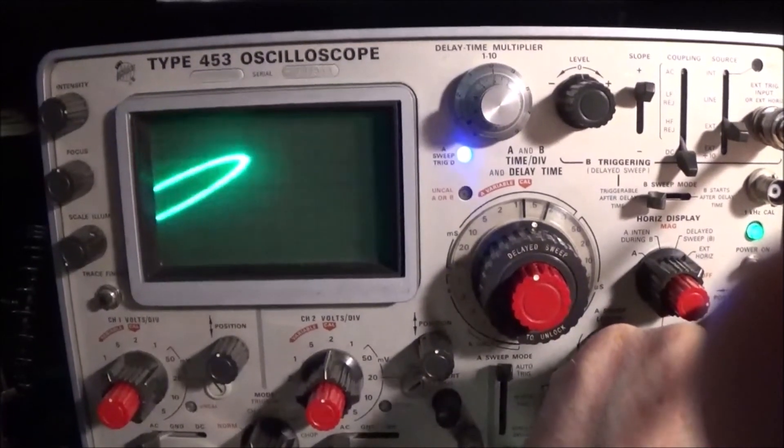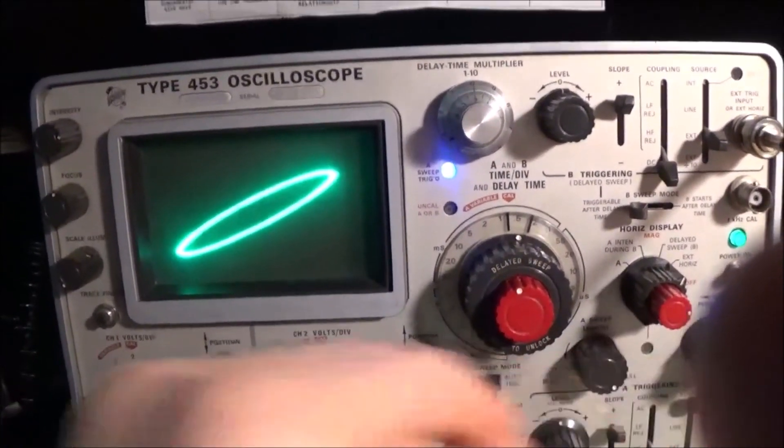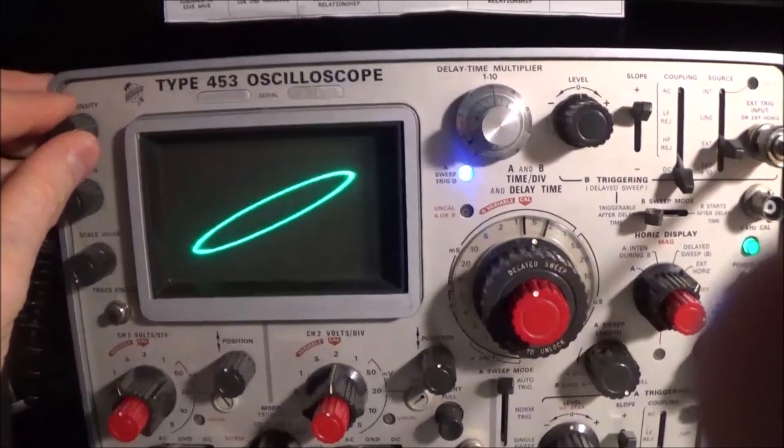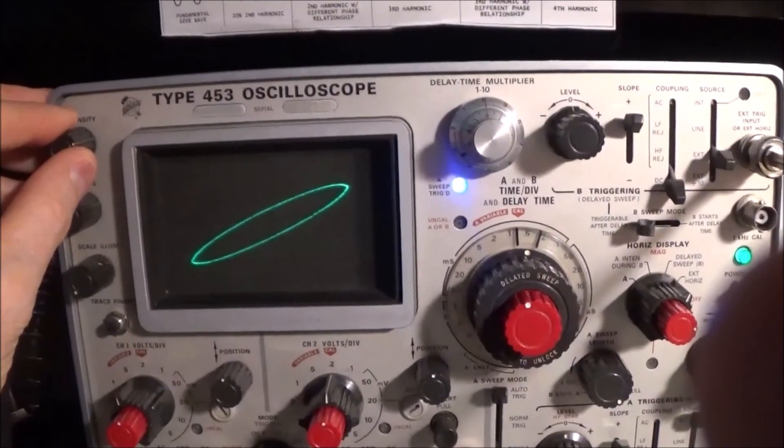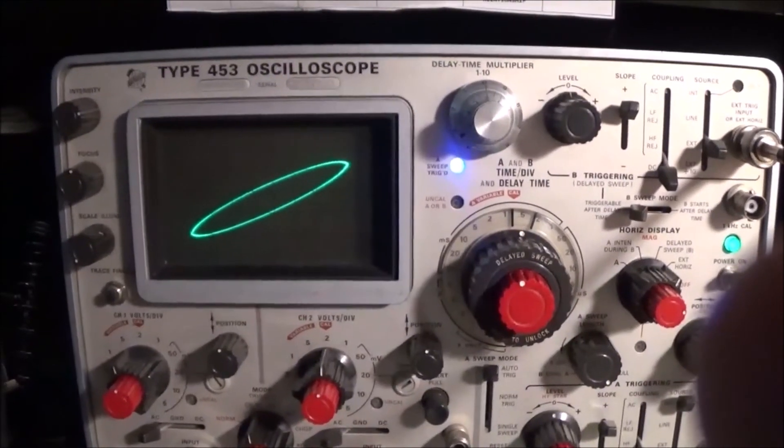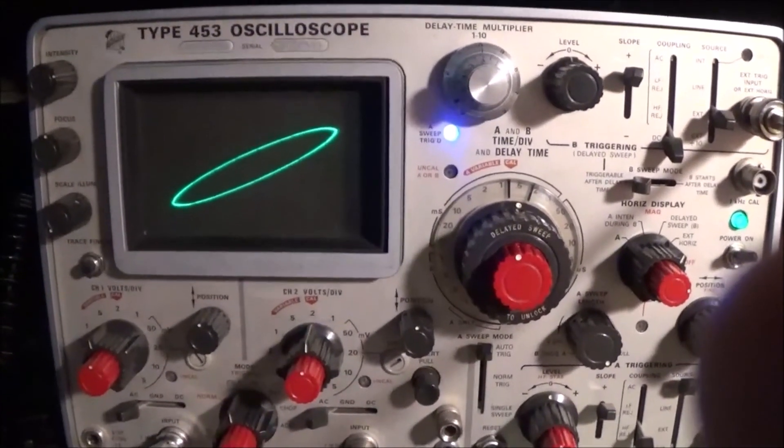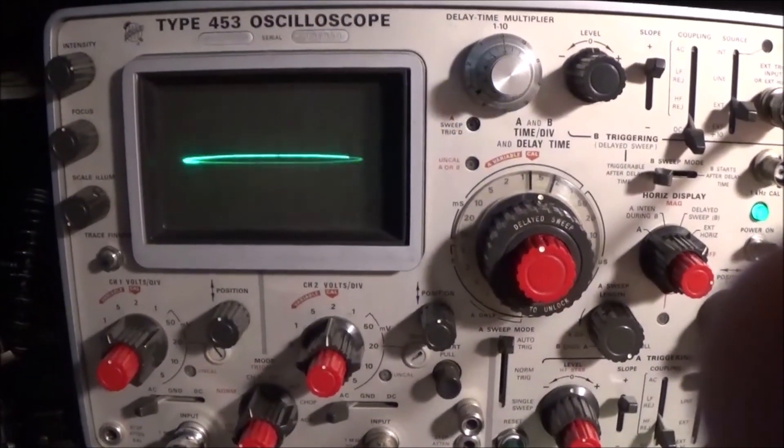This is what can make repairing a 50 plus year old piece of equipment tricky, because so many things could be the problem. And in a highly complex, interactive piece of equipment like a Tektronix 453, it can get convoluted real quick.